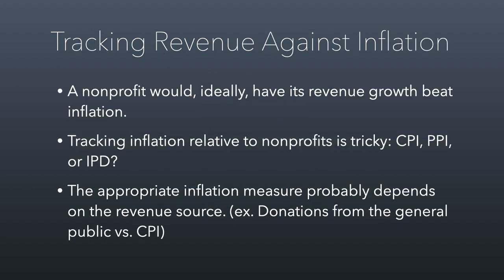A nonprofit would ideally have its revenue growth beat inflation, because if your revenue is not growing faster than inflation, that means your revenue is actually shrinking. Tracking inflation for nonprofits is kind of tricky, because there are different inflation measures used in the United States. One of them is called the CPI, the Consumer Price Index, and that tracks changes in prices for consumers. Basically, one of the Fed offices will track a basket of goods — things that people typically buy — and track changes in prices of those things over time, creating an aggregate inflation measure that tends to be around 3%.